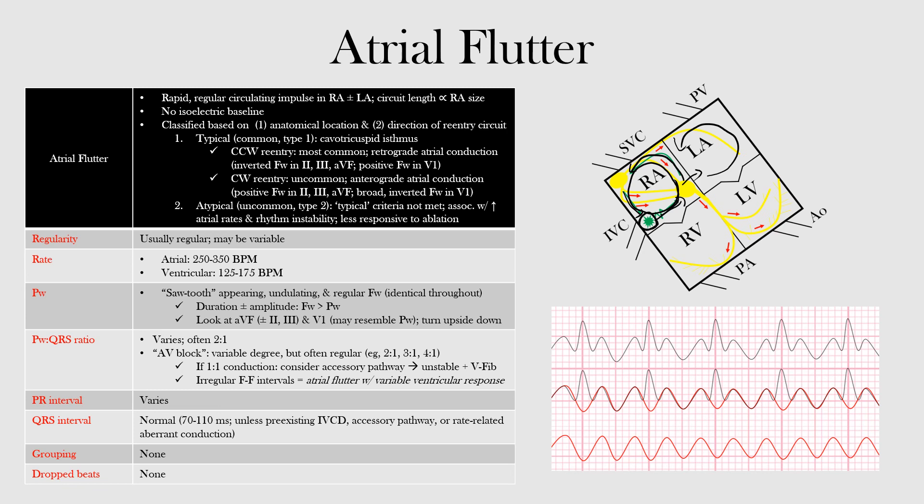In atrial flutter, the impulse takes a continuous circular course, setting up regular rapid flutter waves or F waves with no isoelectric baseline. You may often hear these referred to as a sawtooth pattern. The P waves are referred to as flutter waves or F waves, written with a capital F, because they are not much like normal P waves.